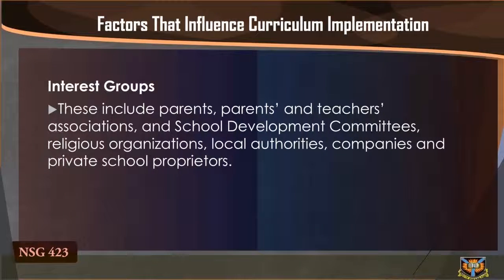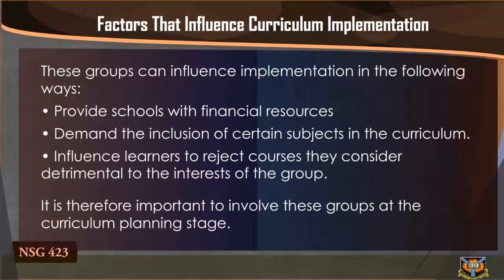Interest groups. These include parents, teachers' associations and school development committees, religious organizations, local authorities, companies, and private school proprietors. These groups can influence implementation in the following ways: providing schools with financial resources to purchase required materials, demanding the inclusion of certain subjects in the curriculum, and influencing learners to reject courses they consider detrimental to the interest of the group.